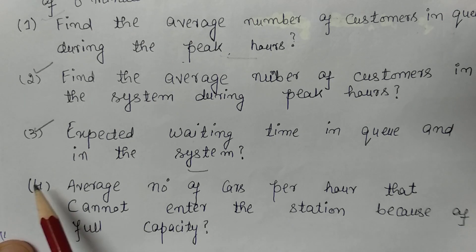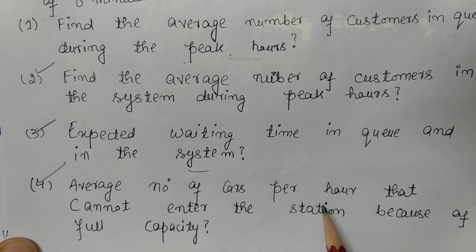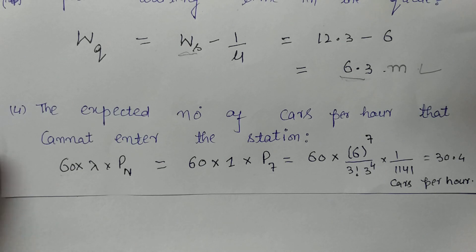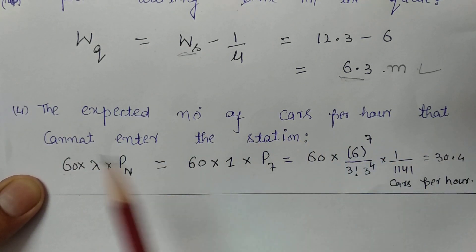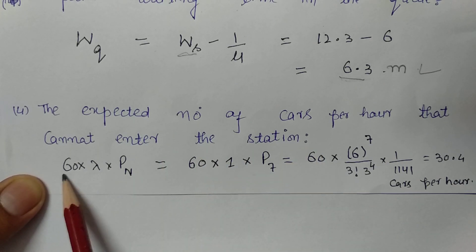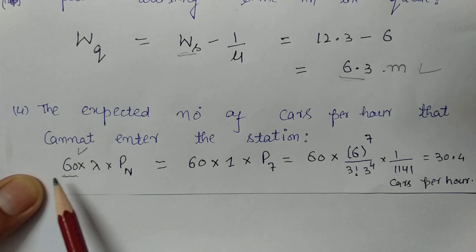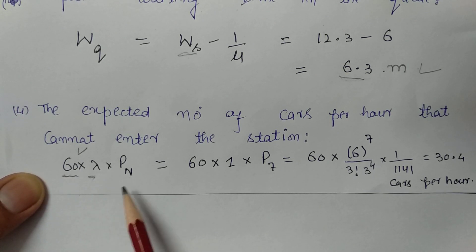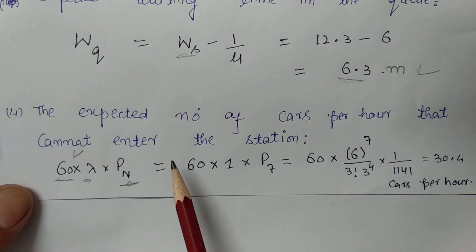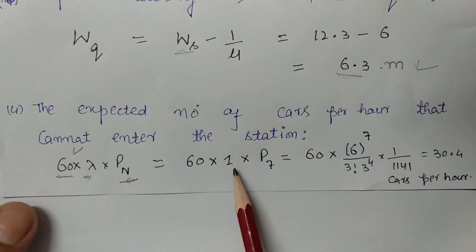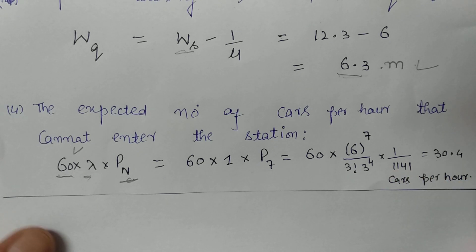Part 4: find the average number of cars per hour that cannot enter the station due to full capacity. This equals 60 minutes × λ × P_7. Since P_7 is the probability the station has 7 cars (full capacity) and λ = 1, after simplifying we get 30.4 cars per hour that cannot enter the station.